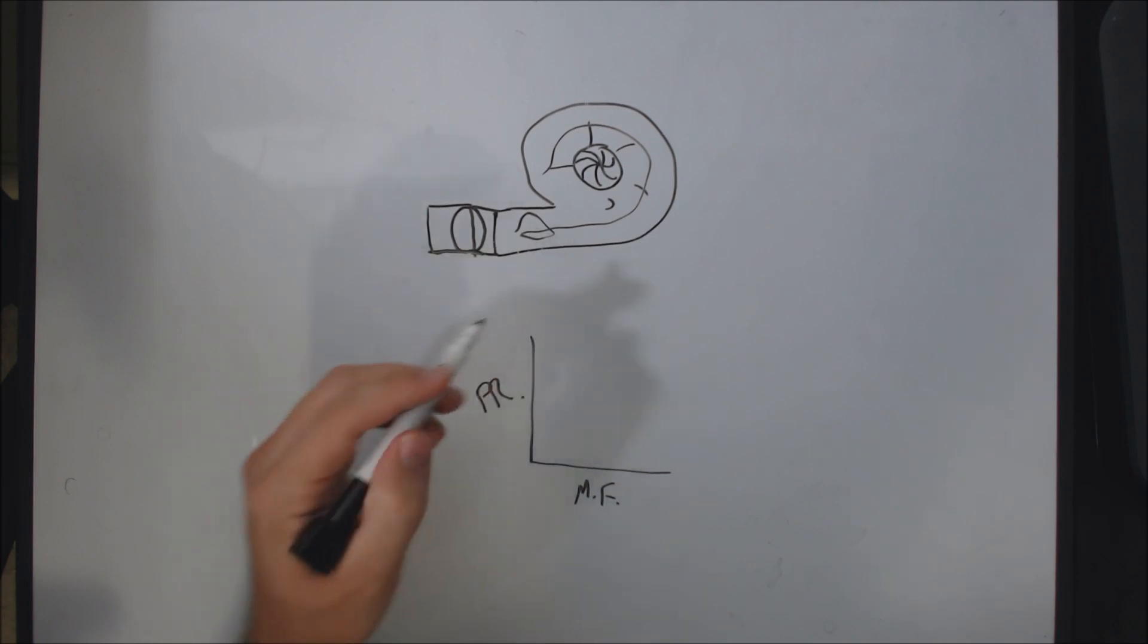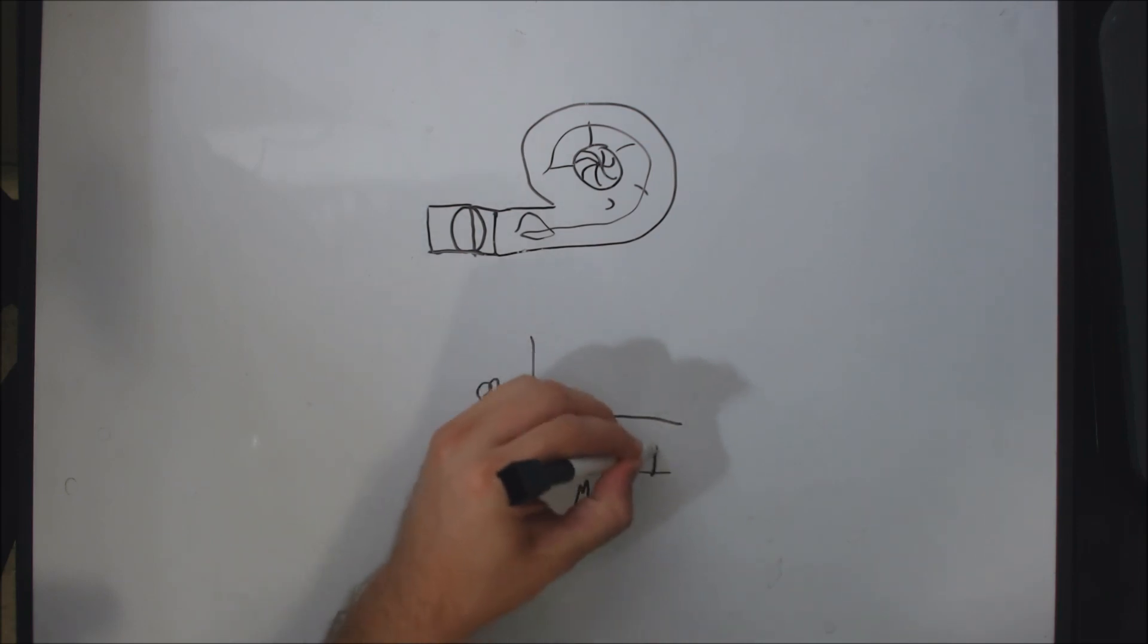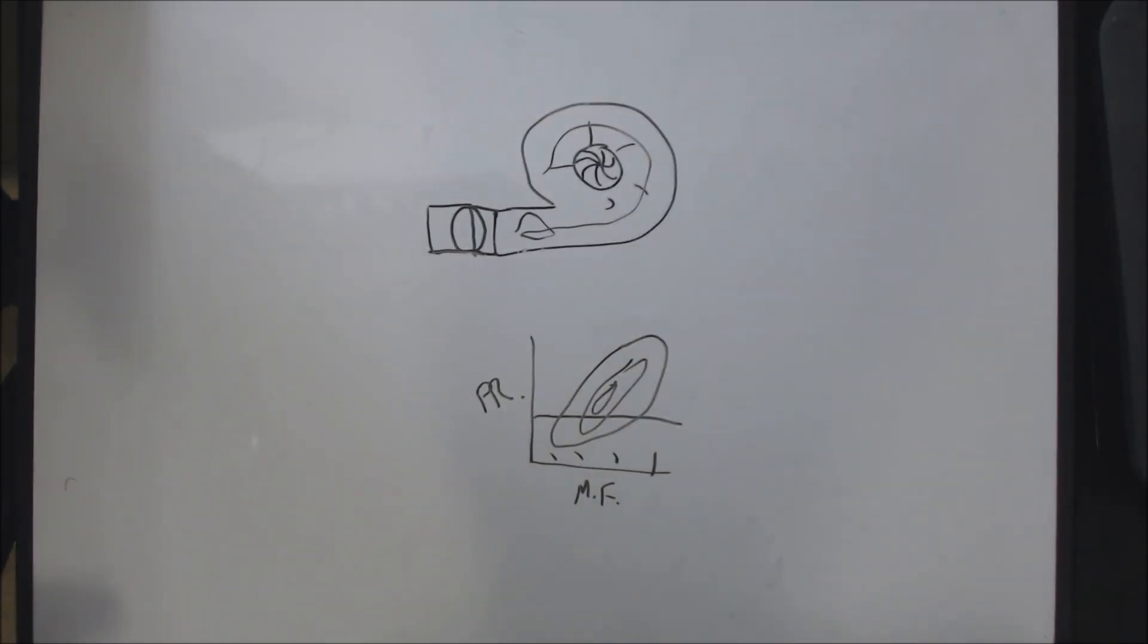So they'll measure the pressure coming out here and here and anywhere. And they'll say, oh, it's twice as much pressure here with this much mass flow. And they'll start to make what you see to be a compressor map.